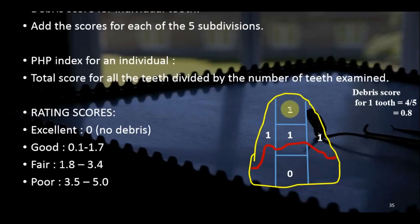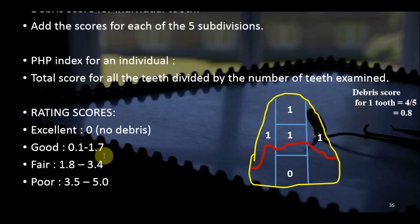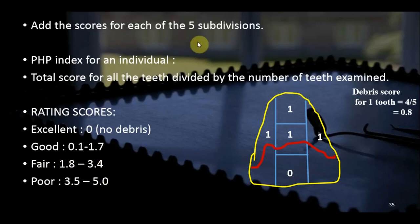The debris score for an individual tooth is calculated by adding all subdivision scores and dividing by five. For example, if four subdivisions score one, the tooth score is 4/5 = 0.8. The PHP Index for an individual is the sum of all tooth scores divided by the number of teeth examined. Interpretation: Excellent = 0, Good = 0.1–1.7, Fair = 1.8–3.4, Poor = 3.5–5.0.